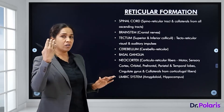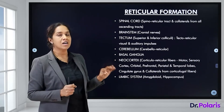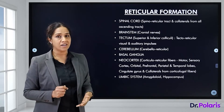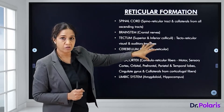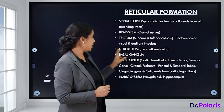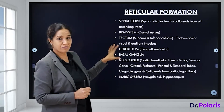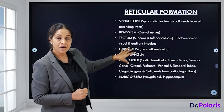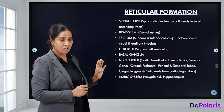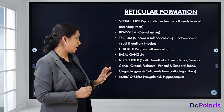The spinal cord connects to the reticular formation through the spinal reticular tract and collaterals from ascending tracts. The brainstem connects through cranial nerves and the tectum — including the superior and inferior colliculi — delivering visual and auditory impulses via the tecto-reticular pathway. The cerebellum connects via the cerebellar reticular tract, and the basal ganglia and neocortex also send inputs through cortico-reticular fibers, both motor and sensory.